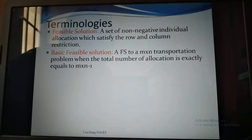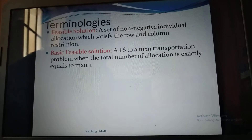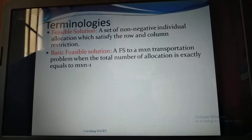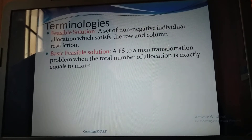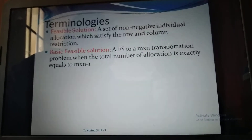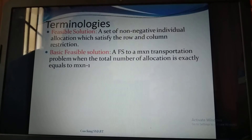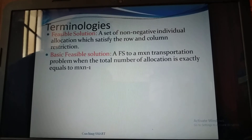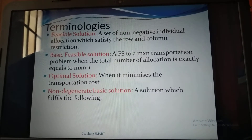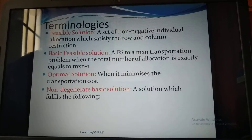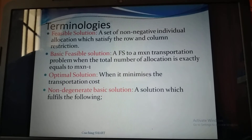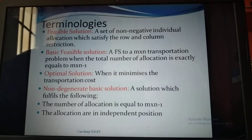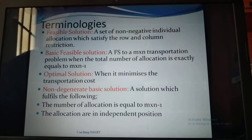Terminologies: First, feasible solution — a set of non-negative individual allocations which satisfy the row and column restrictions. Basic feasible solution — a feasible solution to an m×n transportation problem where the total number of allocations is exactly equal to m+n−1. Optimal solution — when it minimizes the transportation cost. Non-degenerate basic solution — a solution where the number of allocations equals m+n−1 and the allocations are in independent positions.